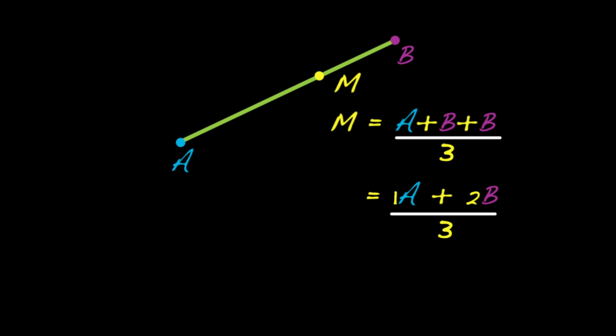And one final form is one-third A, because there's an implicit one in front of the A, and two-thirds in front of the B. So two-thirds B. And notice that this one-third plus this two-thirds add to one. And that's another way of saying that this is a proper average. So that's the algebra.